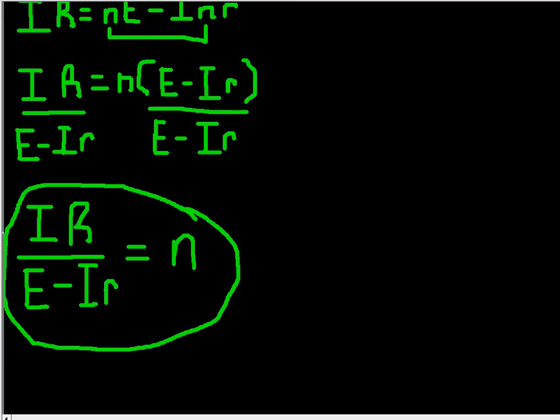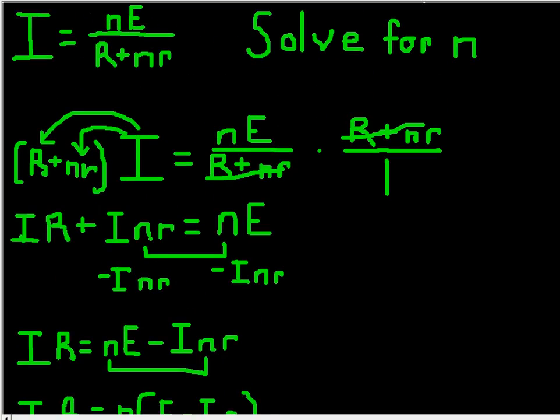We started with I equals nE over R plus nR, told to solve for n. We multiplied by the reciprocal of R plus nR. They cancelled out.